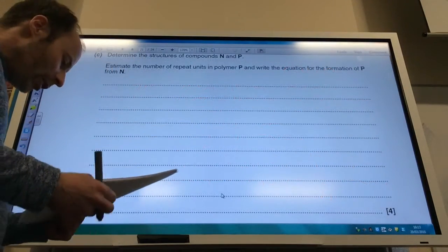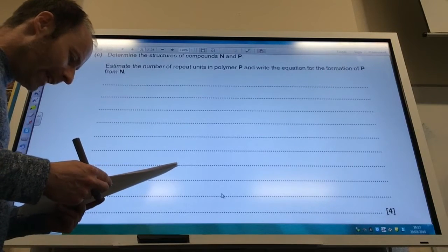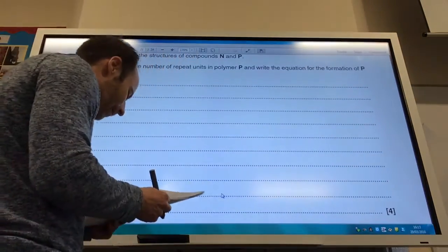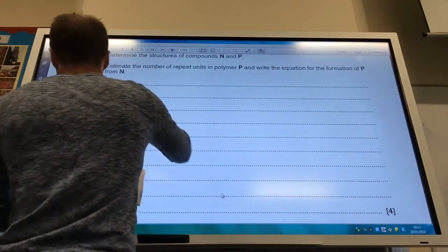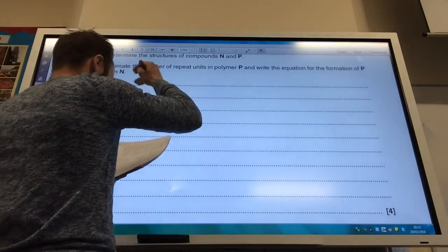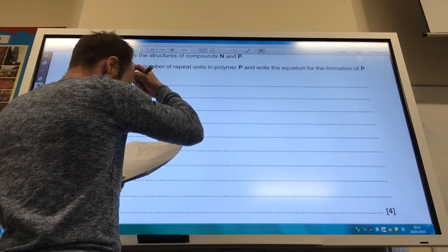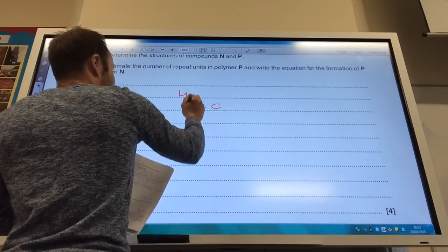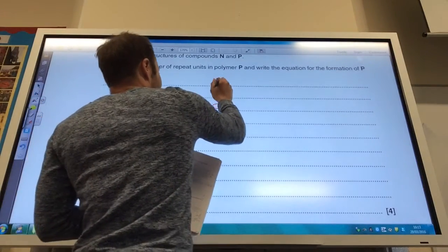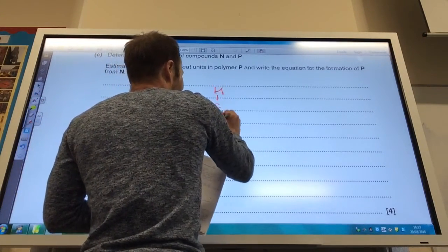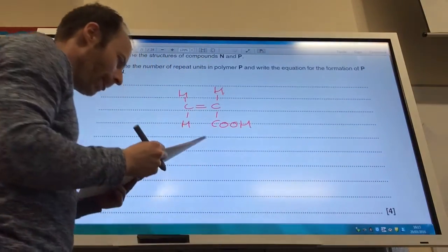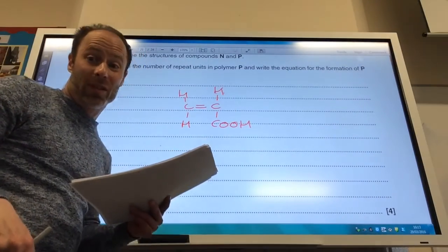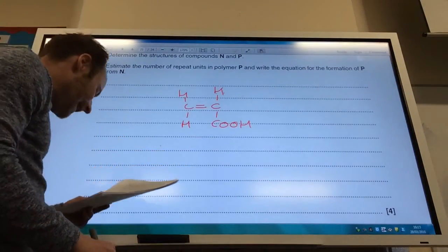Determine the structures of N and P, and estimate the number of repeat units in P. So N, you've got your double bond, you've eliminated that OH group. You've got your double bond there, and that's what you've got. I obviously determined the structure of N in the previous question, because I've got a little bit ahead of myself. So that was N there.